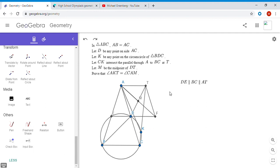Well, you can kind of see from the figure that AEFT is an isosceles trapezoid, and isosceles trapezoids are always cyclic.